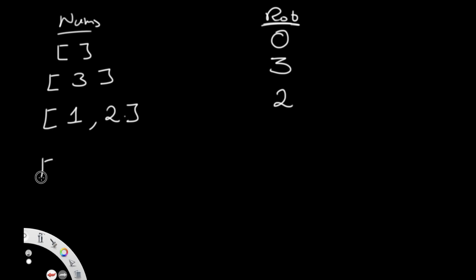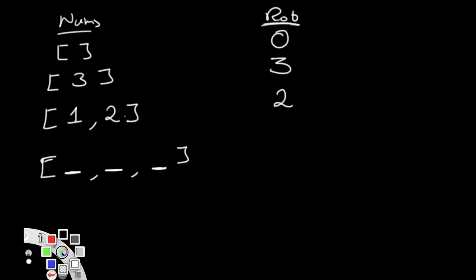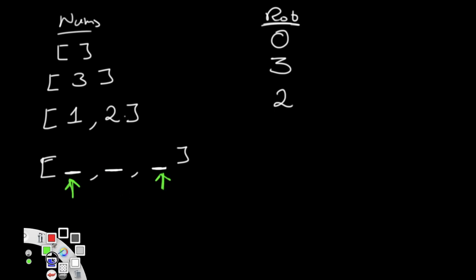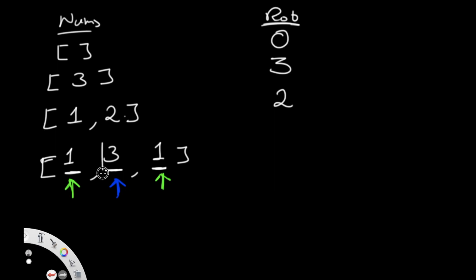Now let's say we have three houses. The possible combinations are: rob the first and third house, or only rob the middle house. To figure out which is better, we'll use dynamic programming. Let's fill in some random values — say one, three, one. Obviously robbing houses one and three gives the maximum, but let's see how we arrive at that.